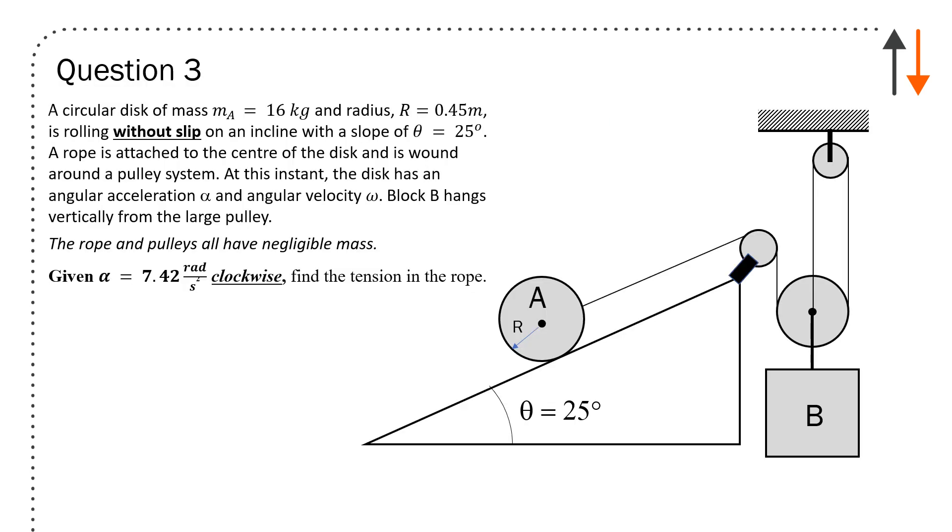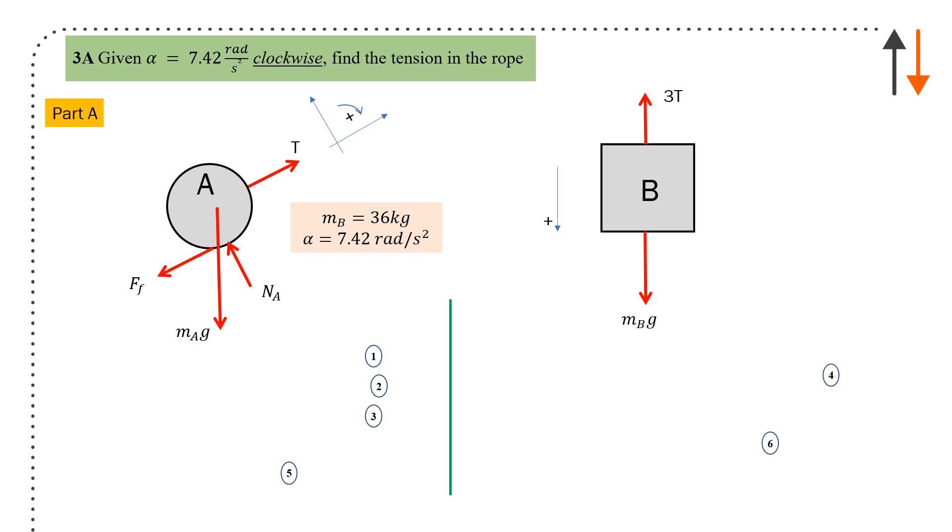Next question: circular disk of mass m_A equals 16 kilos and radius r equals 0.45 meters is rolling without slip on an incline as shown. A rope is attached to the center of the disc and wound around a pulley system. At this instance, the disc has angular acceleration alpha and angular velocity omega. Ropes and pulley have negligible mass. This is a problem that involves pulley dependent motion. Given alpha equals 7.42 rads per second squared clockwise, find the tension in the rope. First, draw out your free body diagrams. Mass of B equals 36 kilos, alpha equals 7.42 rads per second squared. Using the diagram, calculate all the forces in x and y, calculate moments about G.